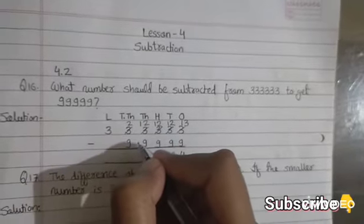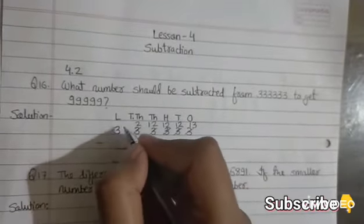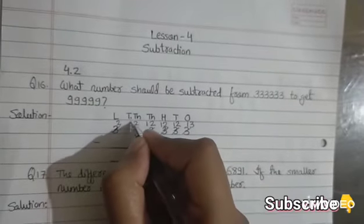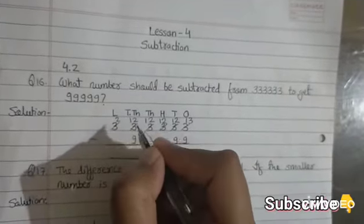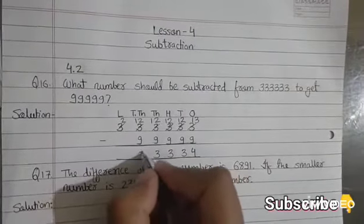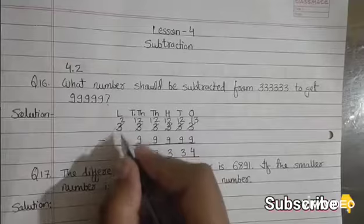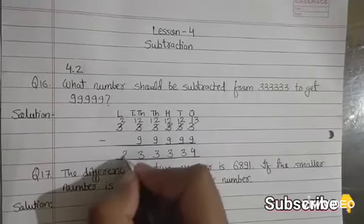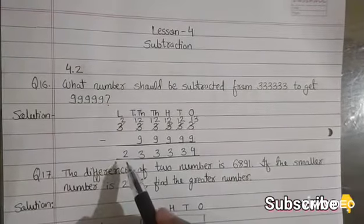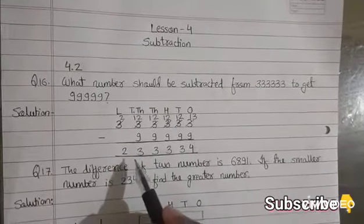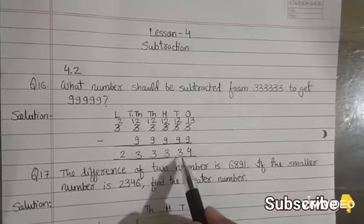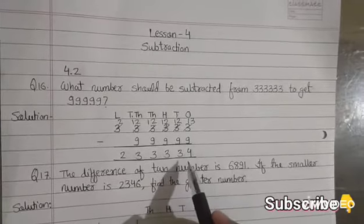2 is smaller than 9, so we will take borrow. This 3 becomes 2, and this 2 becomes 12. So our answer is 2,33,334.